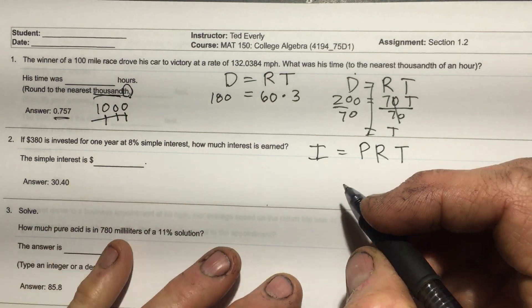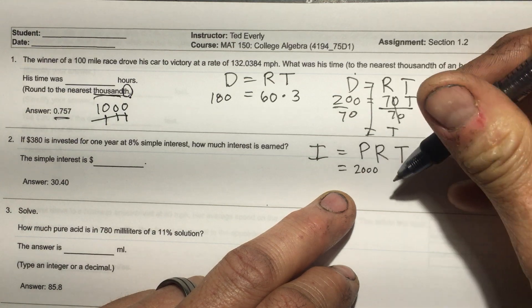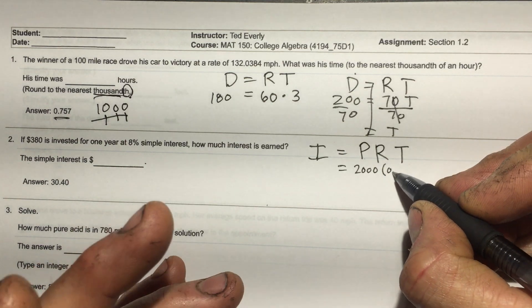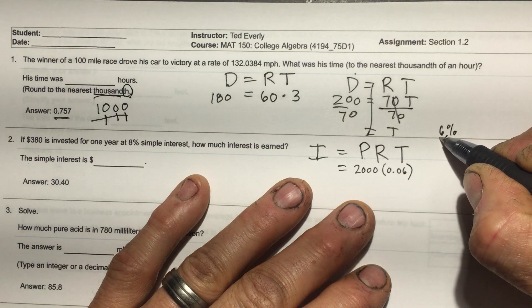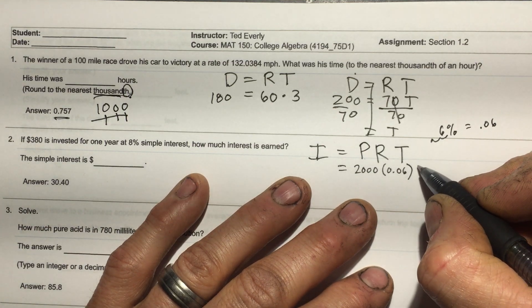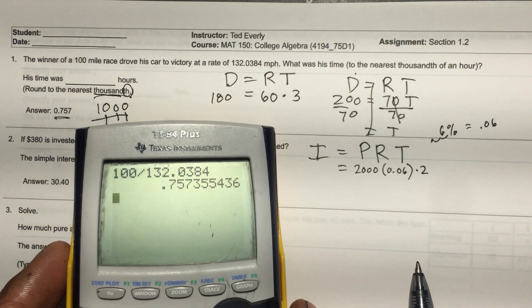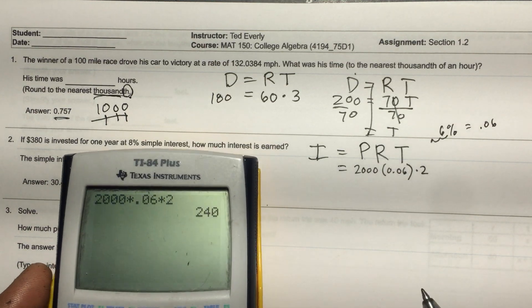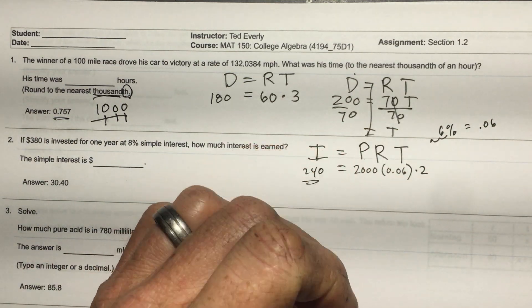For example, if you borrow $2,000 at 6% (which is 0.06) for two years: 2000 times 0.06 times 2 equals $240 interest. That's how simple interest works — we often find ourselves paying it rather than earning it.